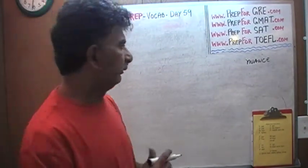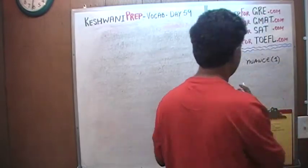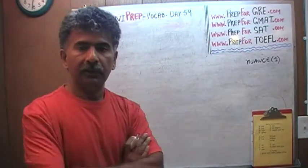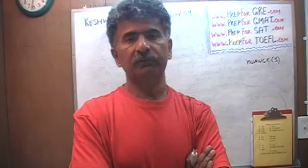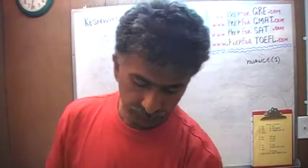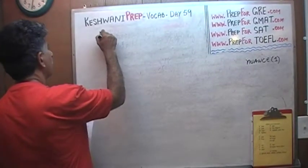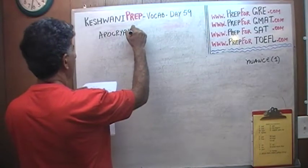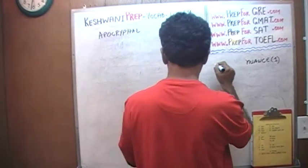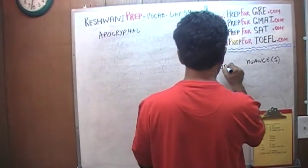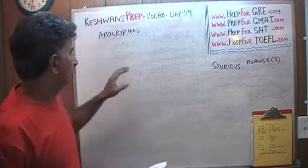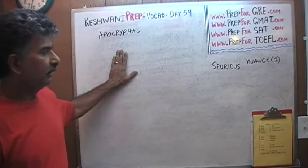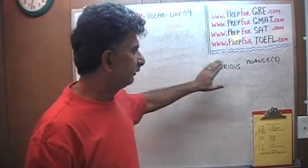I covered this on day number one or two. Just type in 'Keshwani prep dash vocab dash day one' and it is there. Nuance means minute, subtle differences in the meanings of words. The two words I want to talk about are apocryphal and spurious. We will first talk about apocryphal and then spurious. These two words mean pretty much the same thing but they are not the exact same — the difference lies in their nuances.